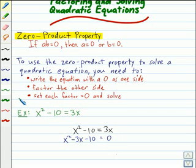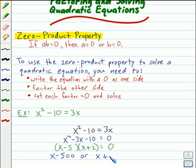So now we're ready to factor. We can factor the left side of the equation to two binomials, x minus 5 and x plus 2. So the zero product property tells us that x minus 5 equals zero, or x plus 2 equals zero.